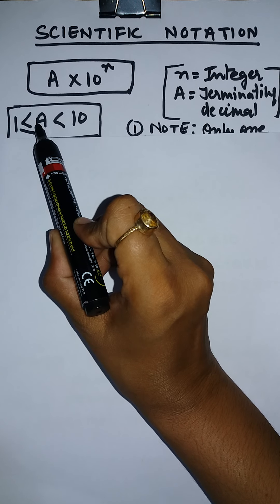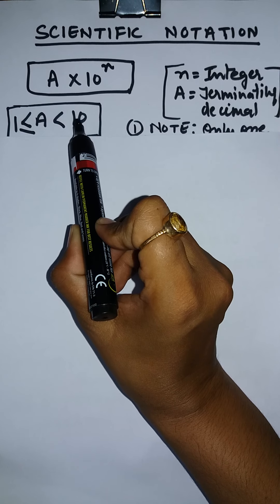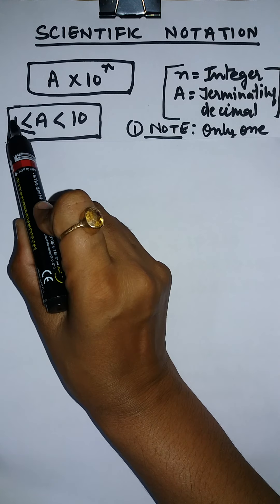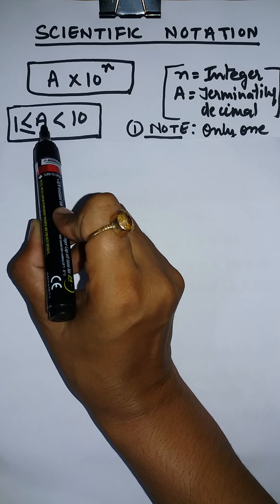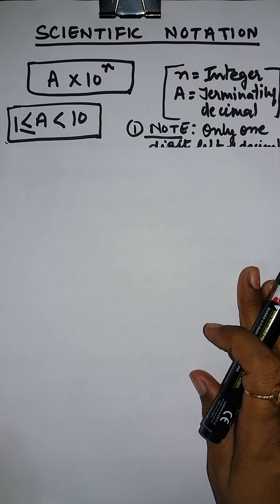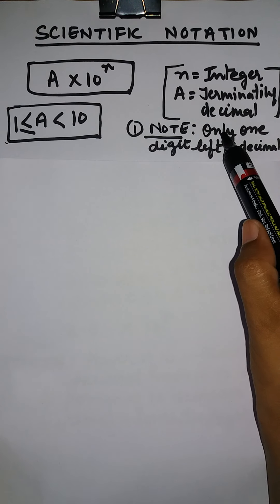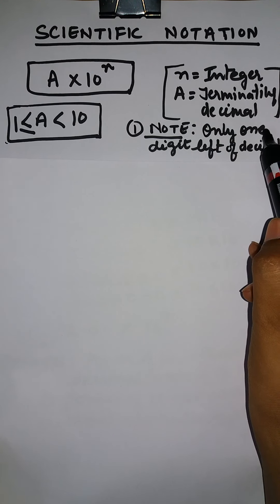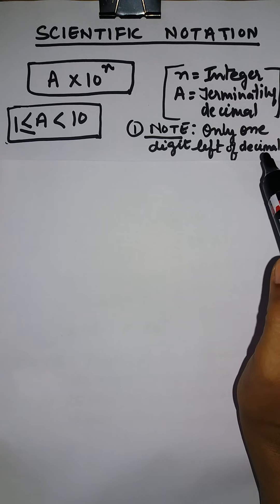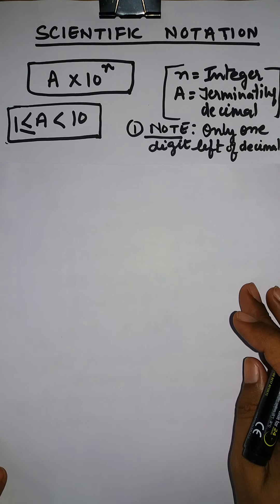Also, a should lie between 1 and 10. It means its value can be more than or equal to 1 but less than 10. One more condition is that only one digit to the left of the decimal should be there.